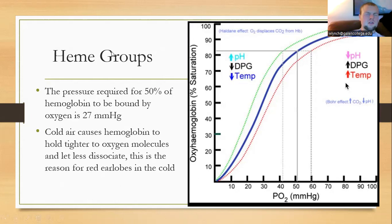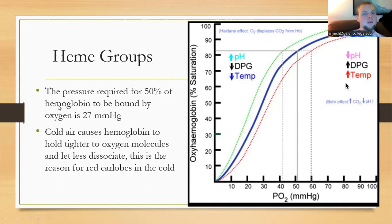Heme groups inside hemoglobin receive oxygen. The pressure required for 50% of hemoglobin to be bound to oxygen is only 27 mmHg. In arterial blood, partial pressure of oxygen is about 90 mmHg, so we could drop a long way and still have 50% of hemoglobin bound. Temperature changes affect binding affinity — cold causes hemoglobin to hold oxygen tighter so less dissociates into the blood, which is why skin becomes more red when cold as oxygen remains bound rather than being dispersed to tissues.